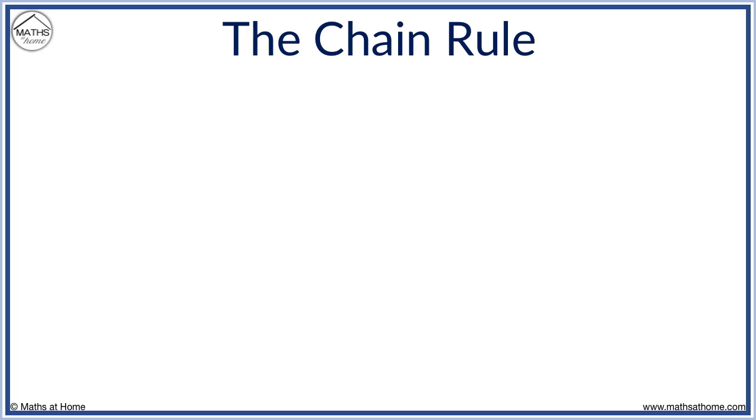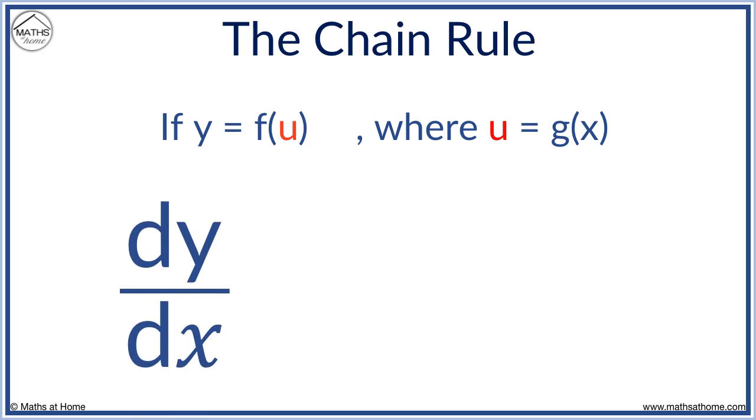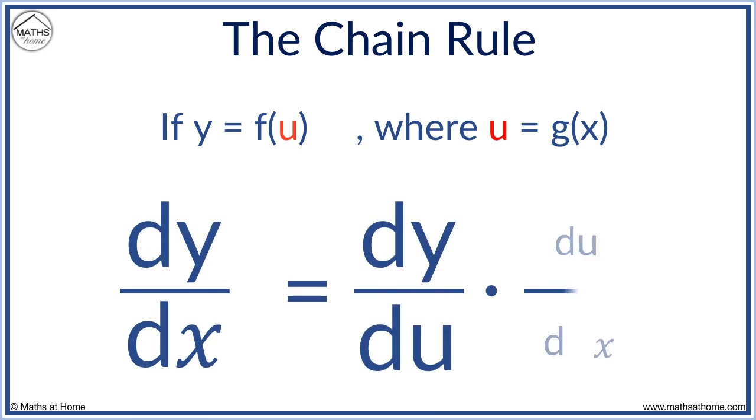We can write this mathematically as y is a function of u, where u is some other function. The chain rule states that dy/dx equals dy/du times du/dx.